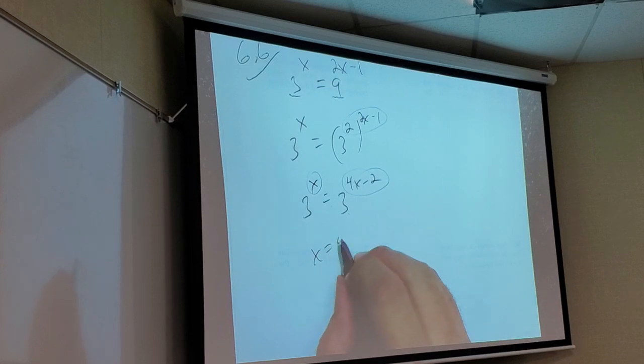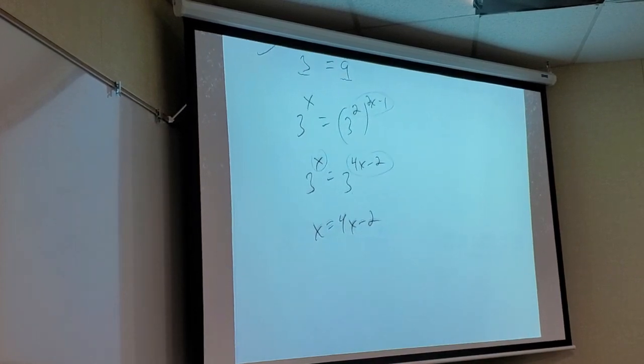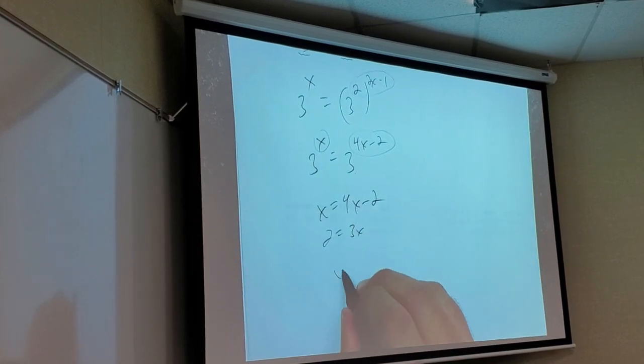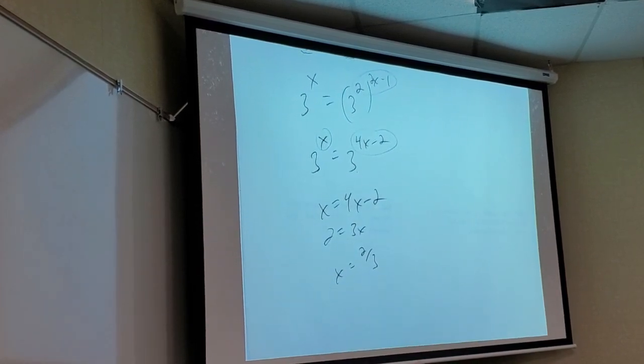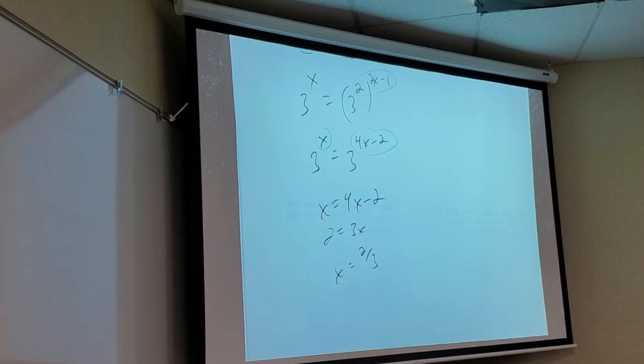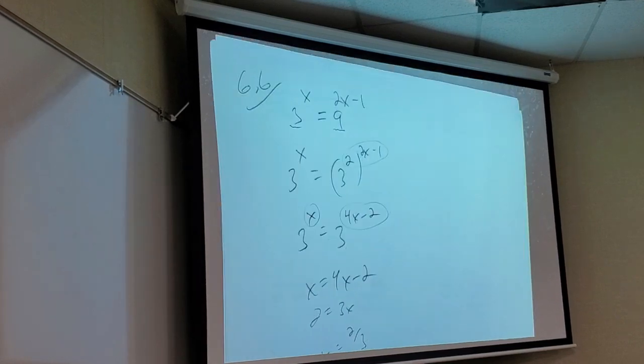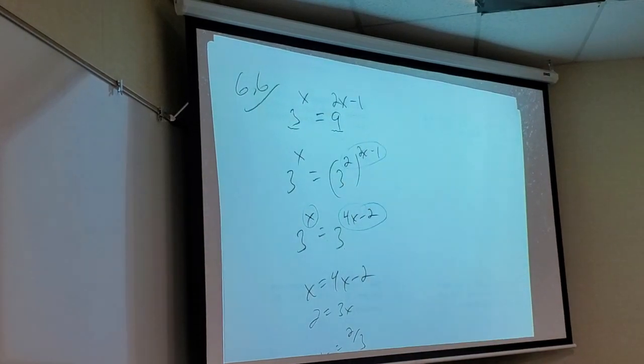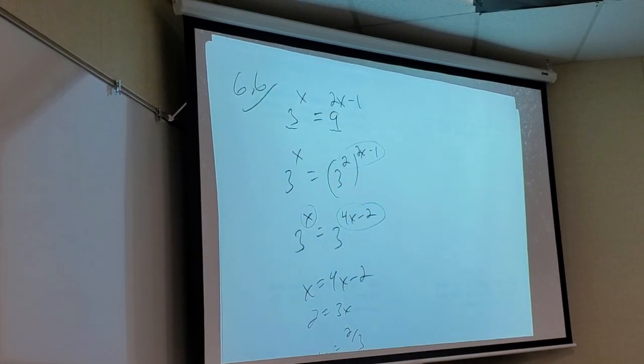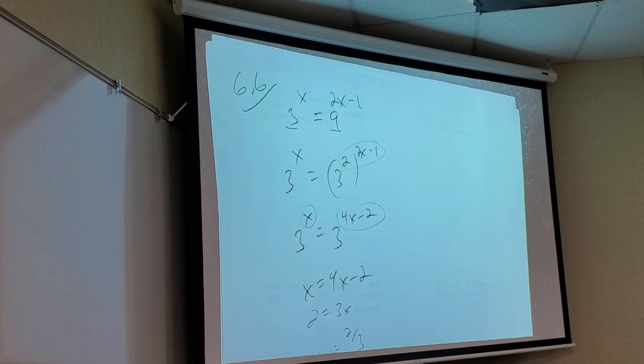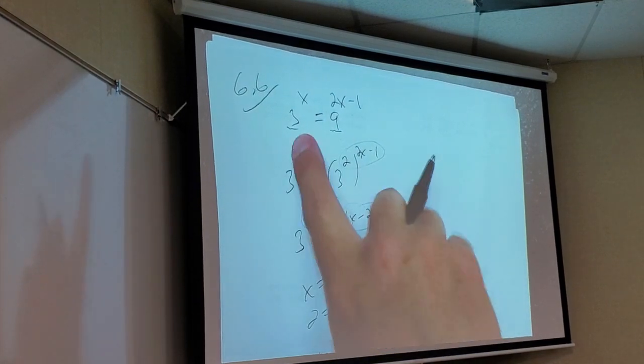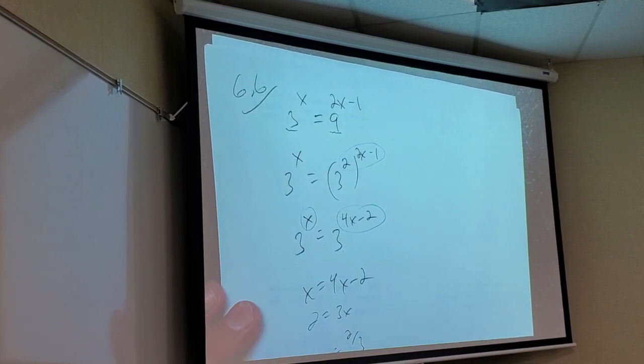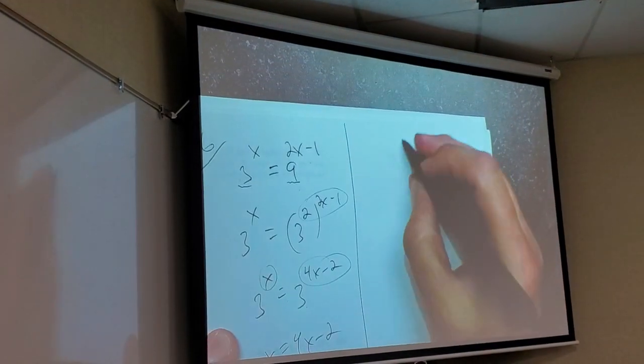So it'd be 3 to the 4x minus 2. If I can make the bases the same in an exponential equation, that's the easiest way to solve it. What's the only way that 3 to this power can equal 3 to this power? If these two powers are the same. So then I just get x equals 4x minus 2. Subtract the x, add the two, I get two thirds.